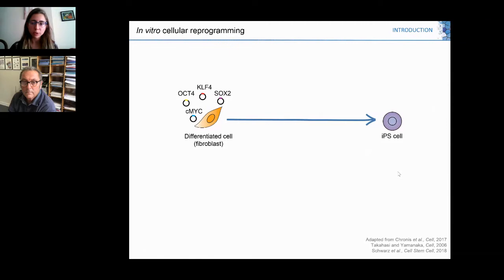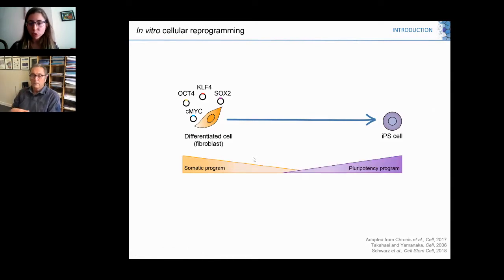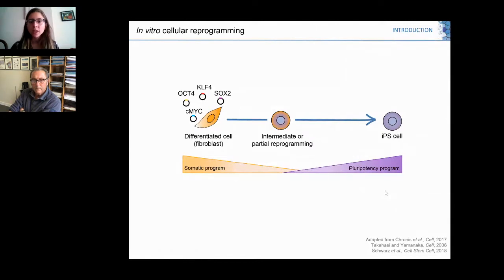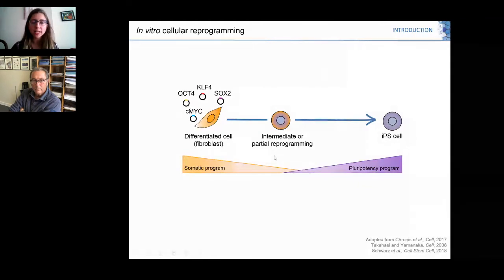Nowadays we know this process is formed by a switch off of the somatic program and later a progressive switch on of the pluripotency program. Different intermediate or partial reprogrammed states have been well documented. We are especially interested in this partial state as cells have lost their cellular identity but are not yet pluripotent.